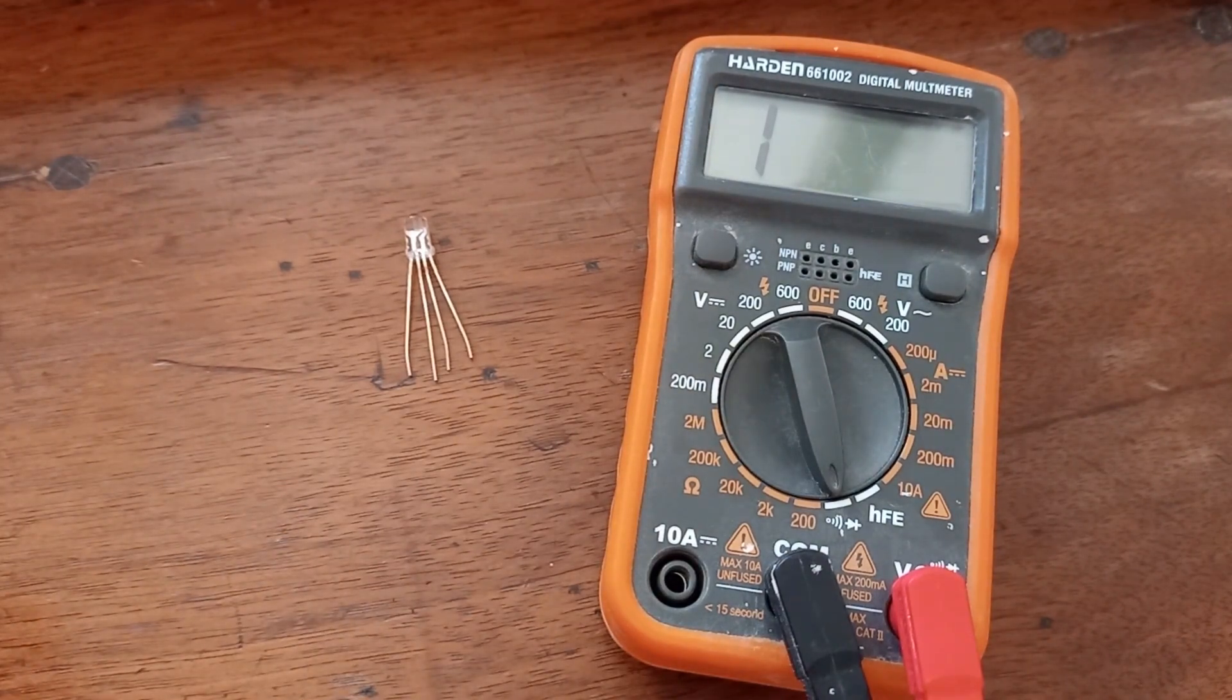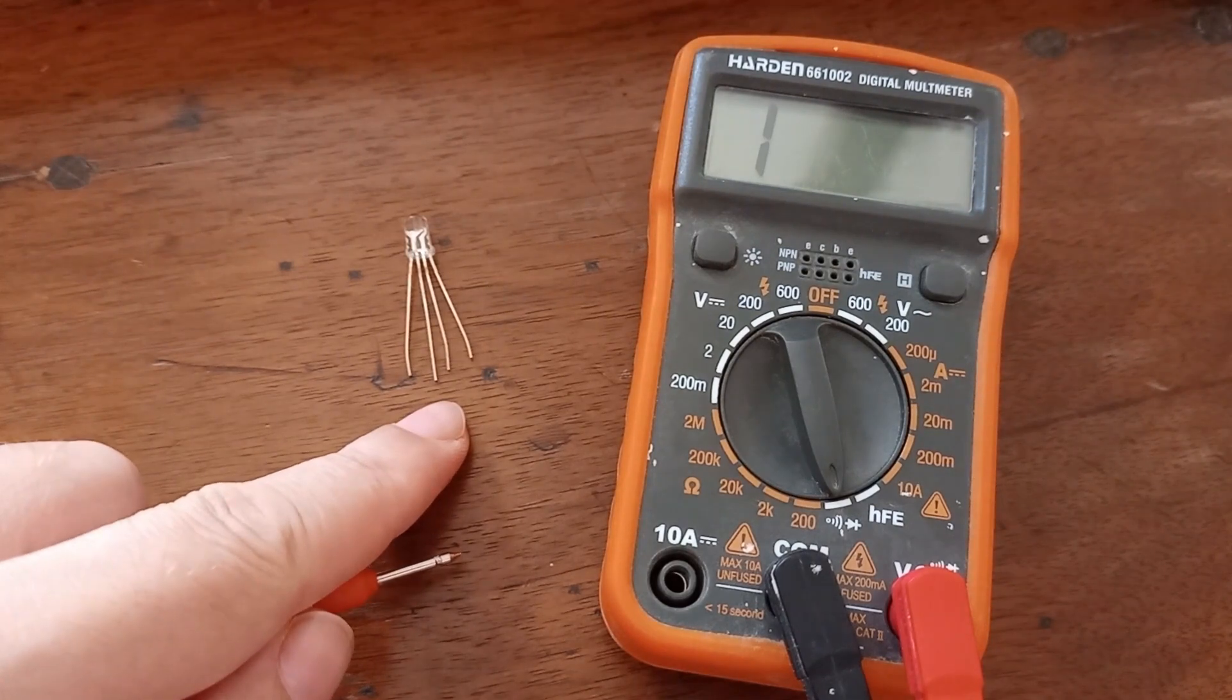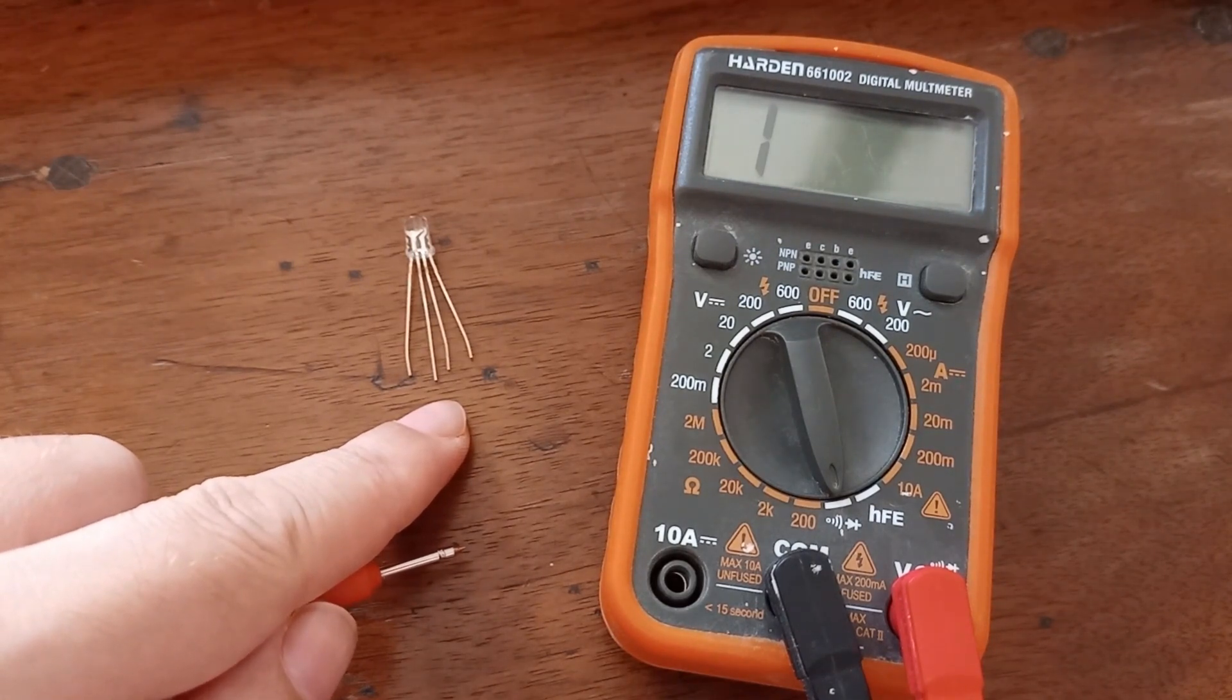So in case of common anode, we are going to connect this joint pin to 5 volts. And if for example we want to get red light, we are going to connect this first pin to the ground.